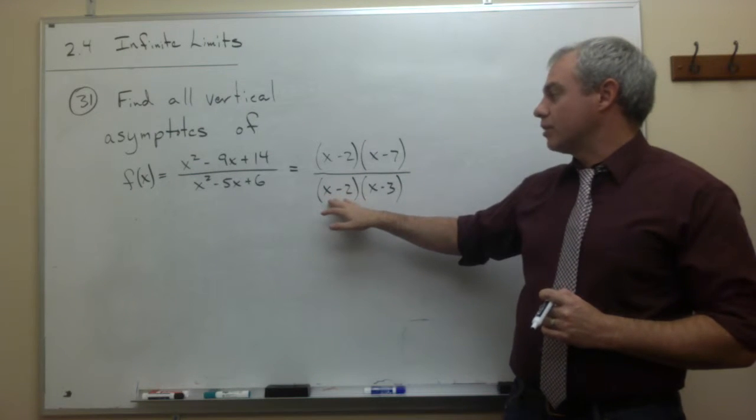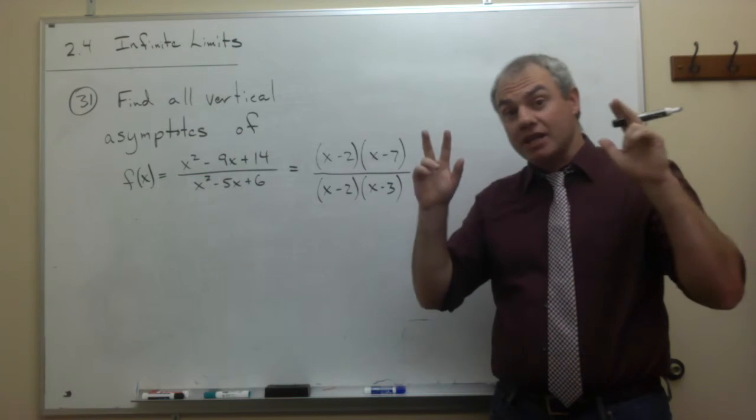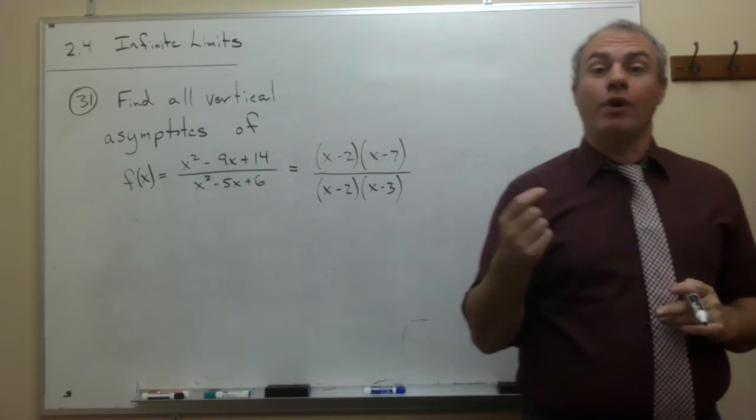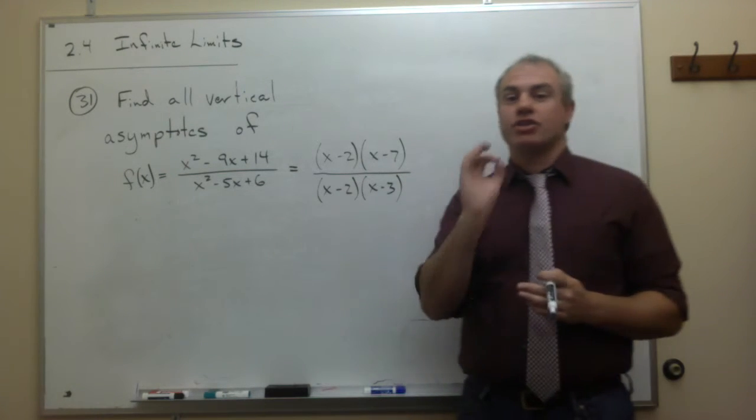Because there's an x minus 2 on the bottom, but there's also an x minus 2 on the top to cancel it out. That doesn't mean that there's a point at 2. That means that there's nothing at 2, but it's just a hole.